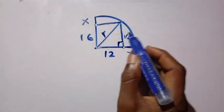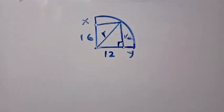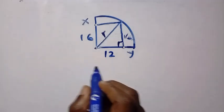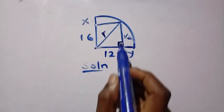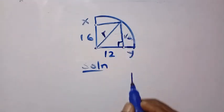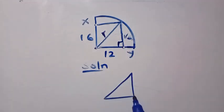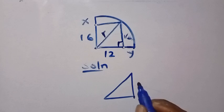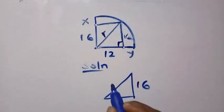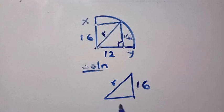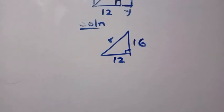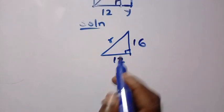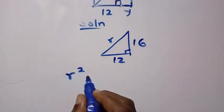By taking out this triangle, we have a right triangle. Let's write the solution: when this triangle comes out, here is 16, here is r, and we have this side as 12.